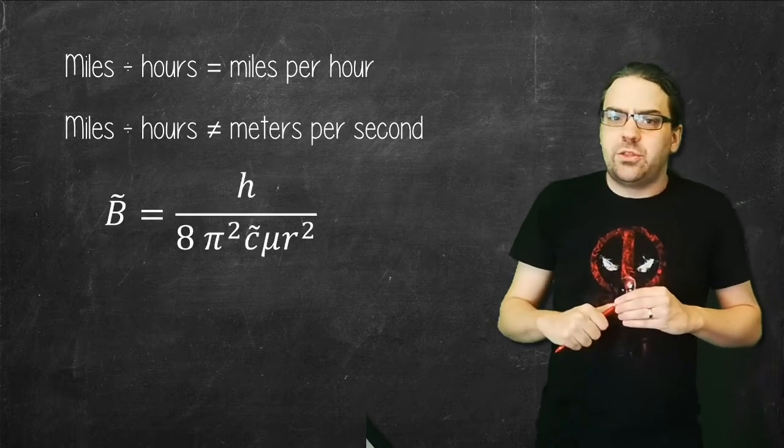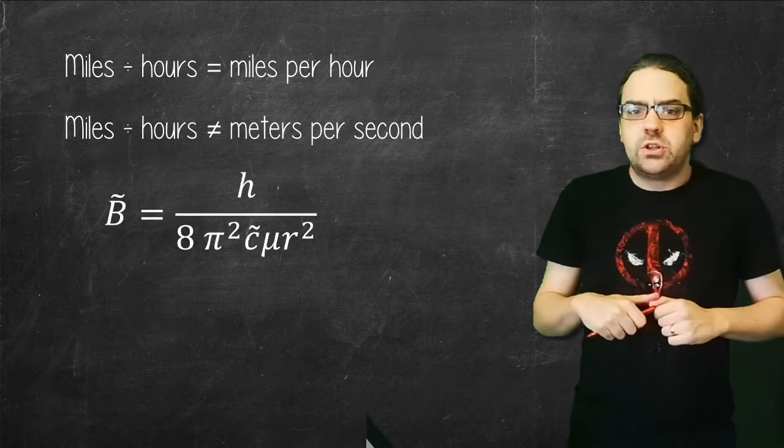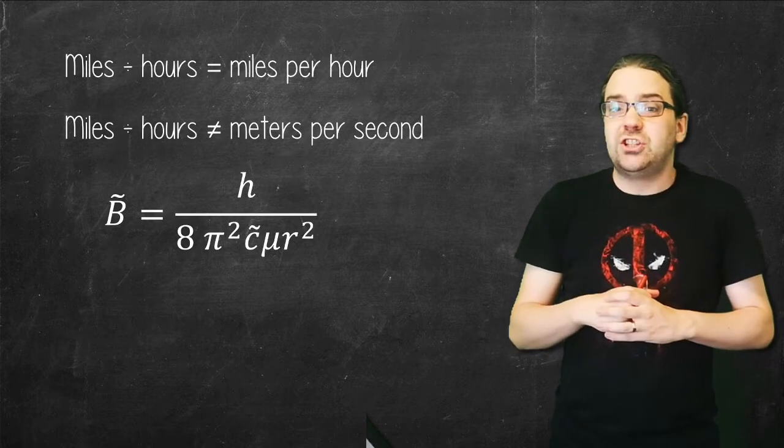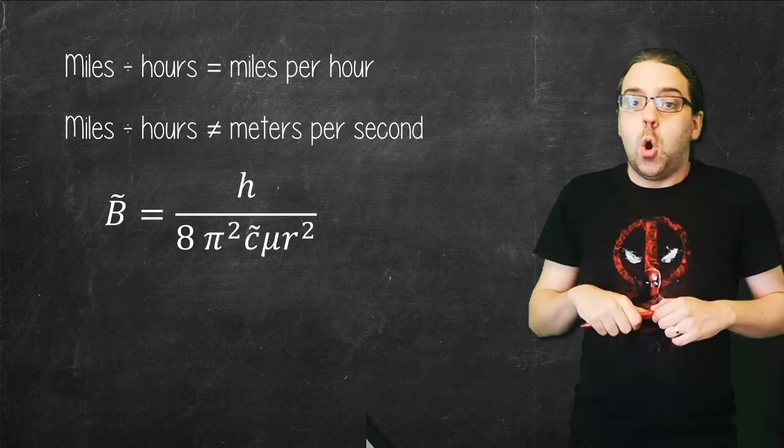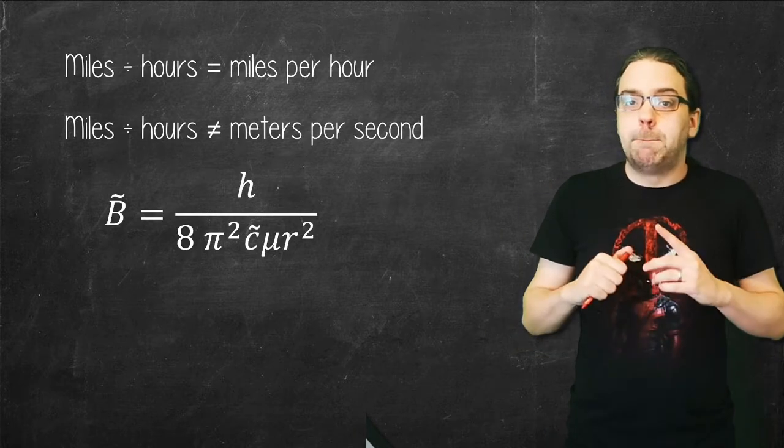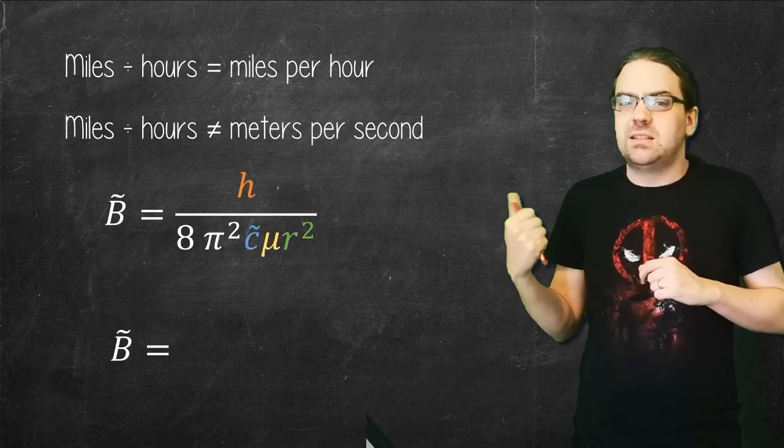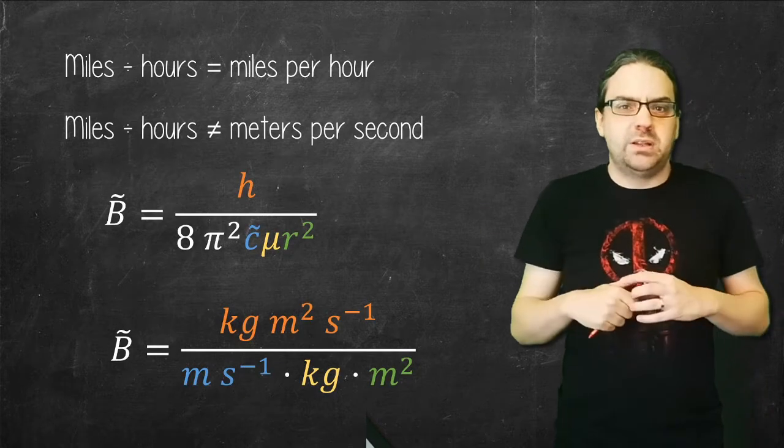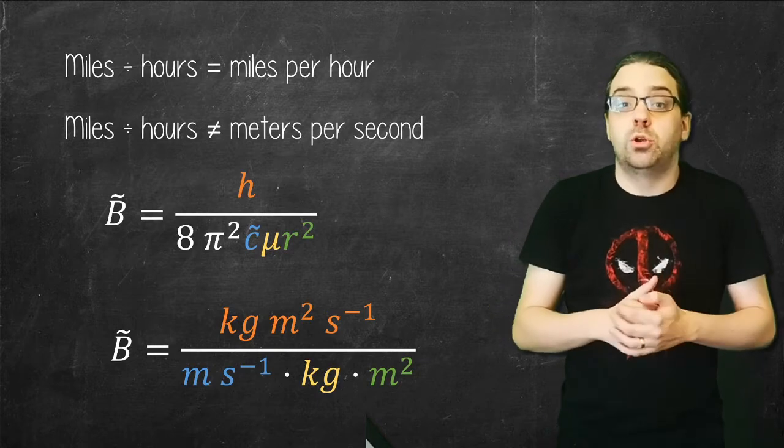What we'll see later is that the rotational constant B, which is a measure of energy, can be expressed as a wave number or reciprocal centimeters. But if you get that speed of light as meters per second instead, you end up with reciprocal meters, two orders of magnitude out from what you expect.